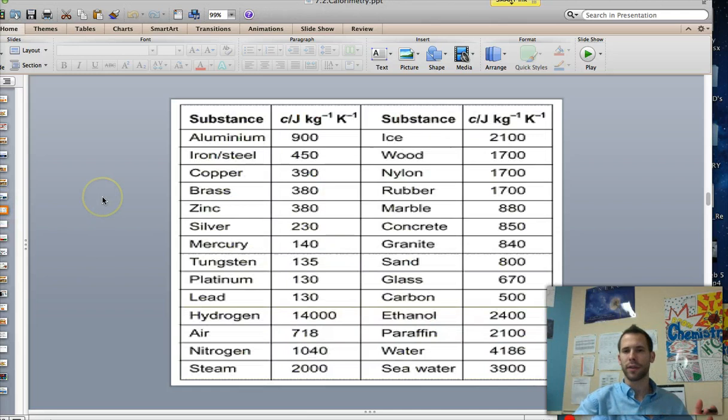Now different substances have all different kinds of specific heat. In fact if you look at some of the metals - lead, platinum, tungsten, mercury, silver, zinc, brass, copper, iron, steel, aluminum - they have less than a thousand values, but just water in of itself has a value of about 4186 joules per kilogram Kelvin which is pretty crazy. It's a much higher value than you might expect.